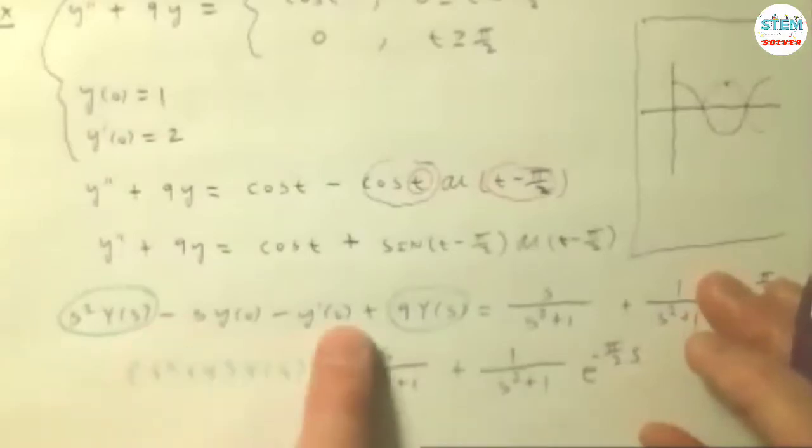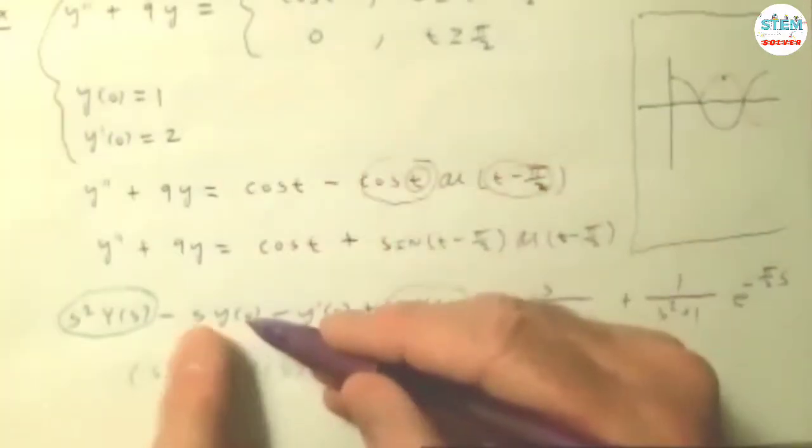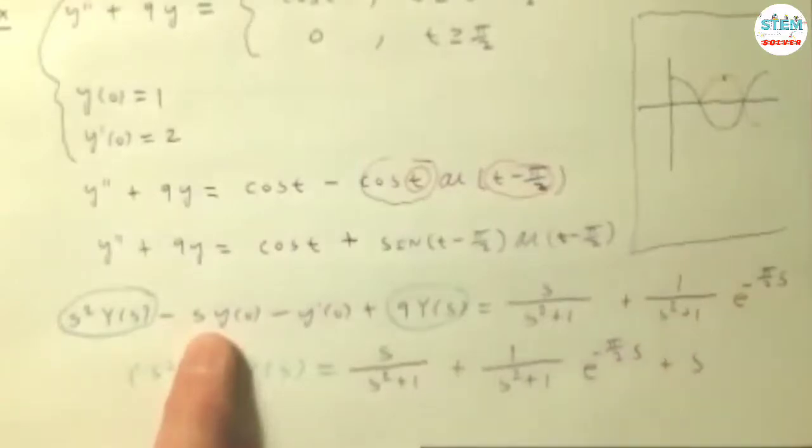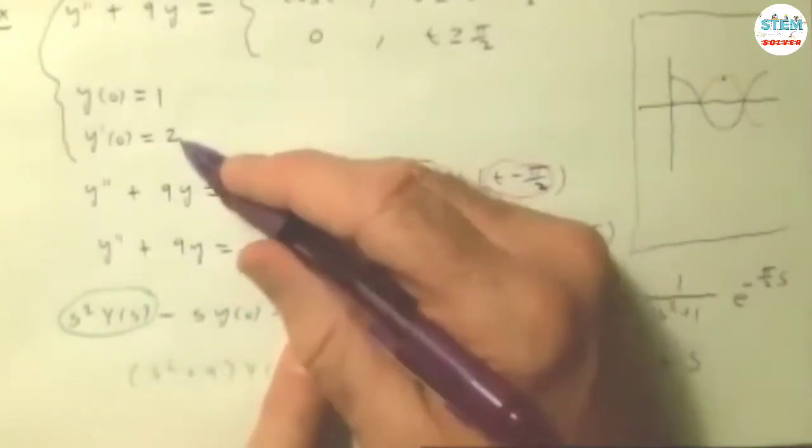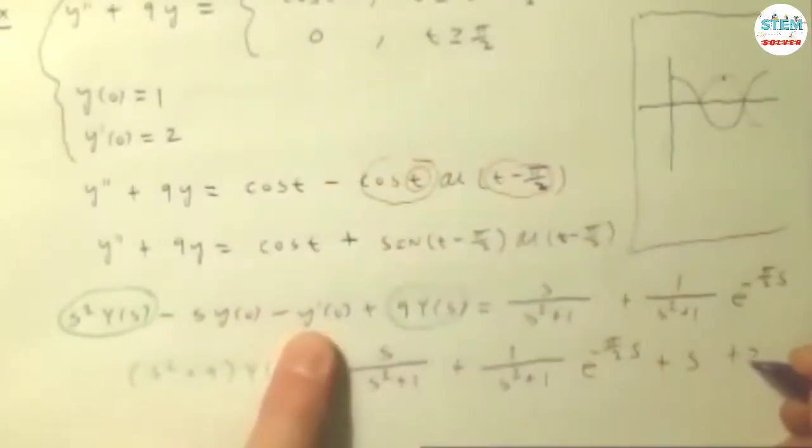Now don't forget about the conditions. They're not always going to be zero. So Y of 0 is 1. When I put in 1, I get minus s, but when I move it over it becomes s. Minus Y prime of 0 is 2, so minus 2 to the right gives plus 2.